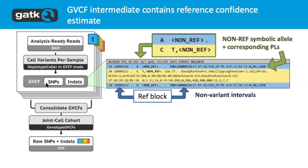We want to do that because when we go to jointly genotype the samples, we want to know how confident we are that there was no variant at a particular site in a given sample - because maybe there's a chance that there was a variant, so we want to have a sense of that and actually estimate that information. It's not the exact computation that HaplotypeCaller does, but it's some kind of heuristic.